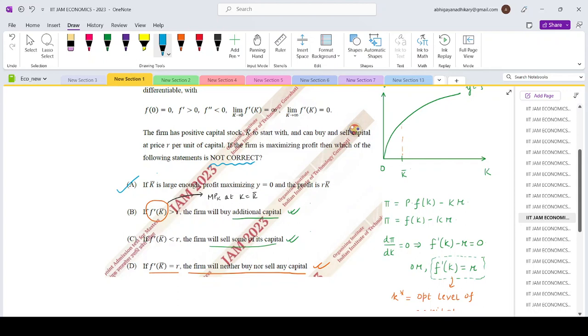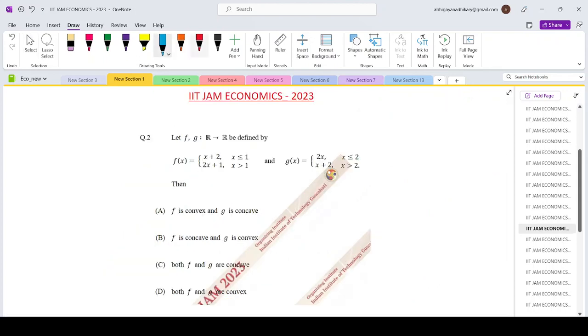Thank you everyone. Now let us come to question 2 of the IIT JAM economics 2023 paper. So let F and G be two functions defined in this way. Then we need to check which one is convex and which one is concave.